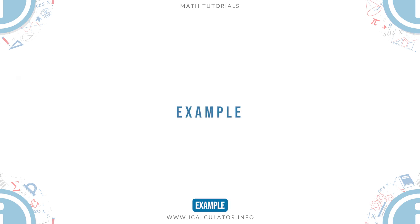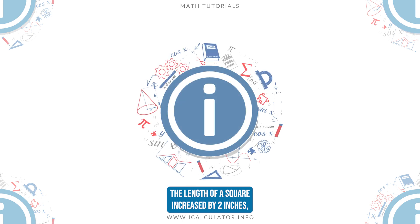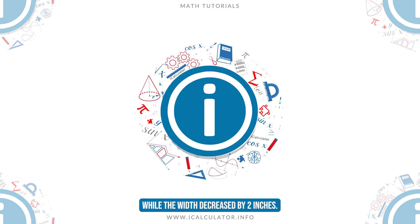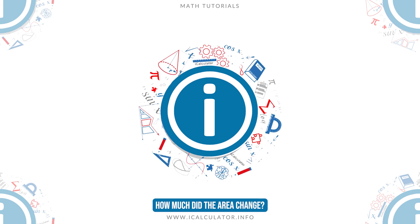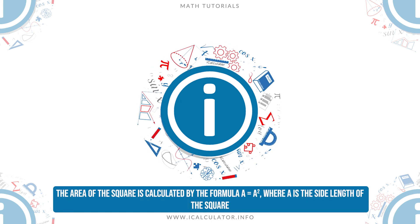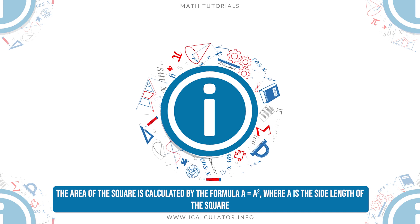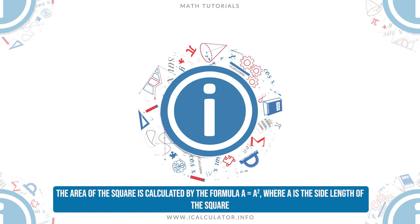Example. The length of a square increased by 2 inches while the width decreased by 2 inches. How much did the area change? The area of the square is calculated by the formula a equals a squared, where a is the side length of the square.